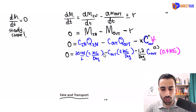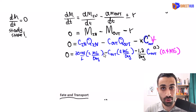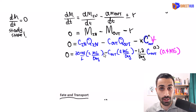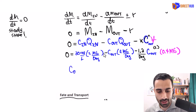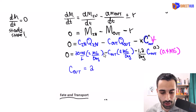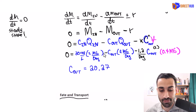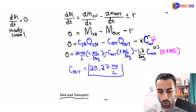We now have one equation and one unknown. Solve for C_out in your calculator. C_out should come out to approximately 20.27 mg/L. That is the concentration of nitrate leaving the reactor, and that's our answer.